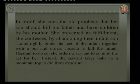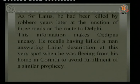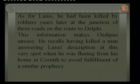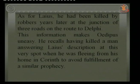As for Laius, Jocasta explains he was killed by robbers at the junction of three roads on the road to Delphi. This information makes Oedipus uneasy, because he recalls having killed a man matching Laius' description at that very spot — while he was fleeing from his home in Corinth to avoid fulfillment of a similar prophecy. Oedipus himself had been told a prophecy that he would kill his father and marry his mother.